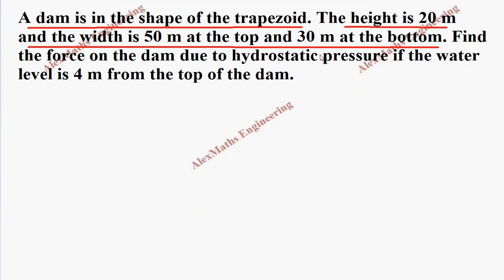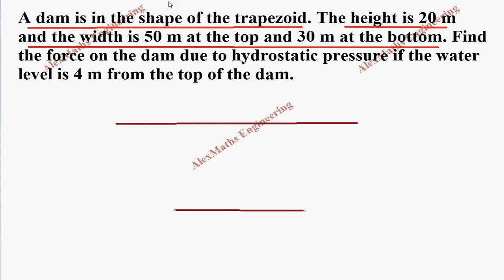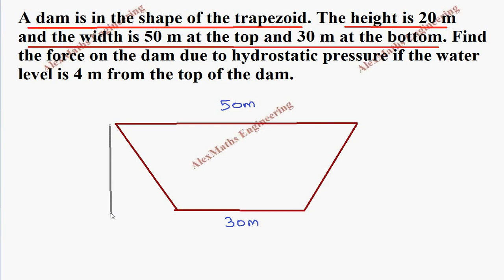Let's construct a small diagram for the given dimensions. We have the dam in the shape of a trapezoid with different widths — 50 meters at the top and 30 meters at the bottom. The height is 20 meters, drawn from the top down to the bottom of the dam.